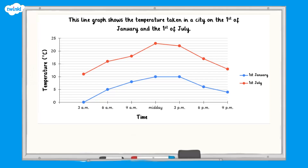This line graph shows us two sets of data. The key on the right tells us that the blue line represents the temperature on the 1st of January, and the red line represents the temperature on the 1st of July.